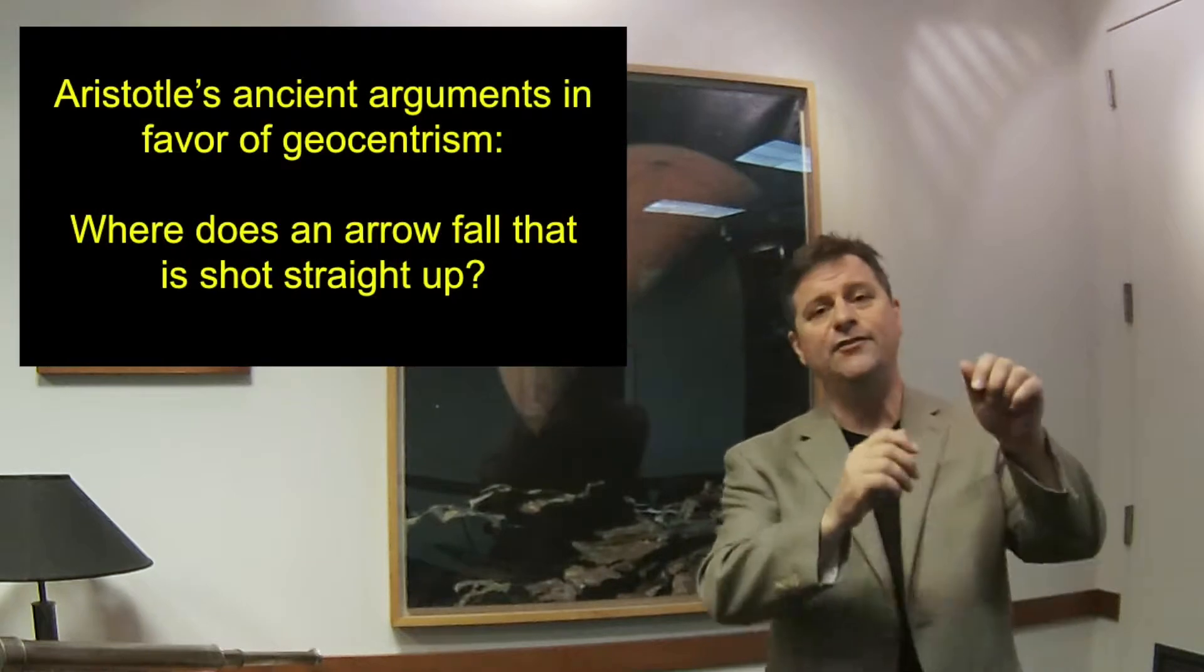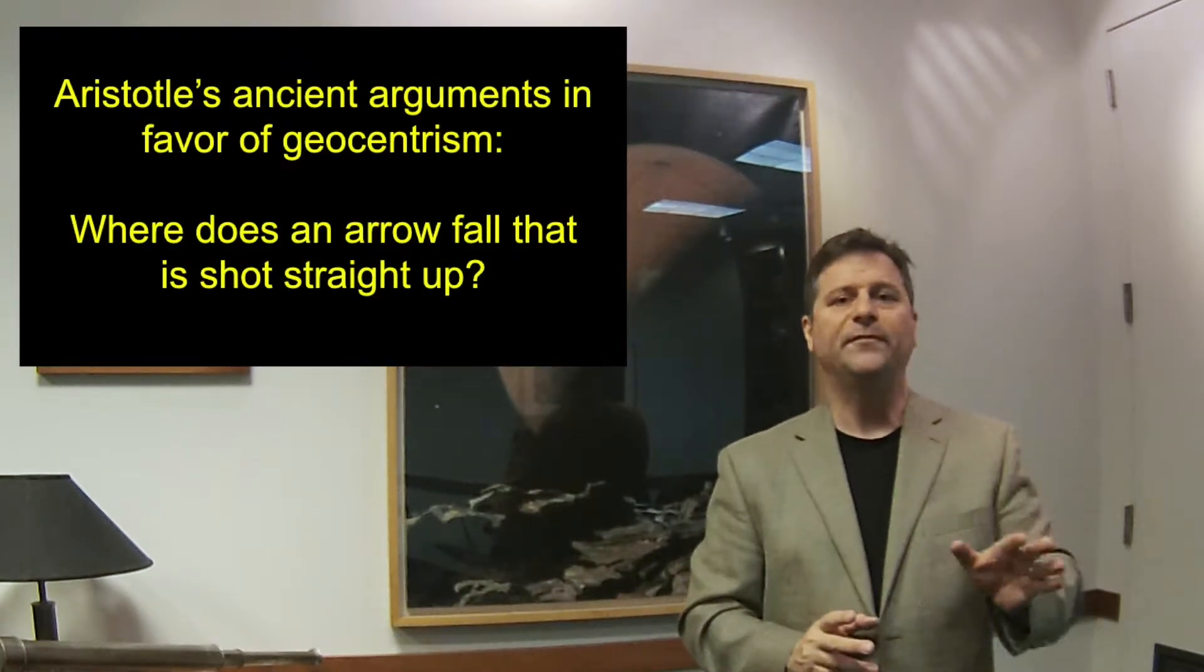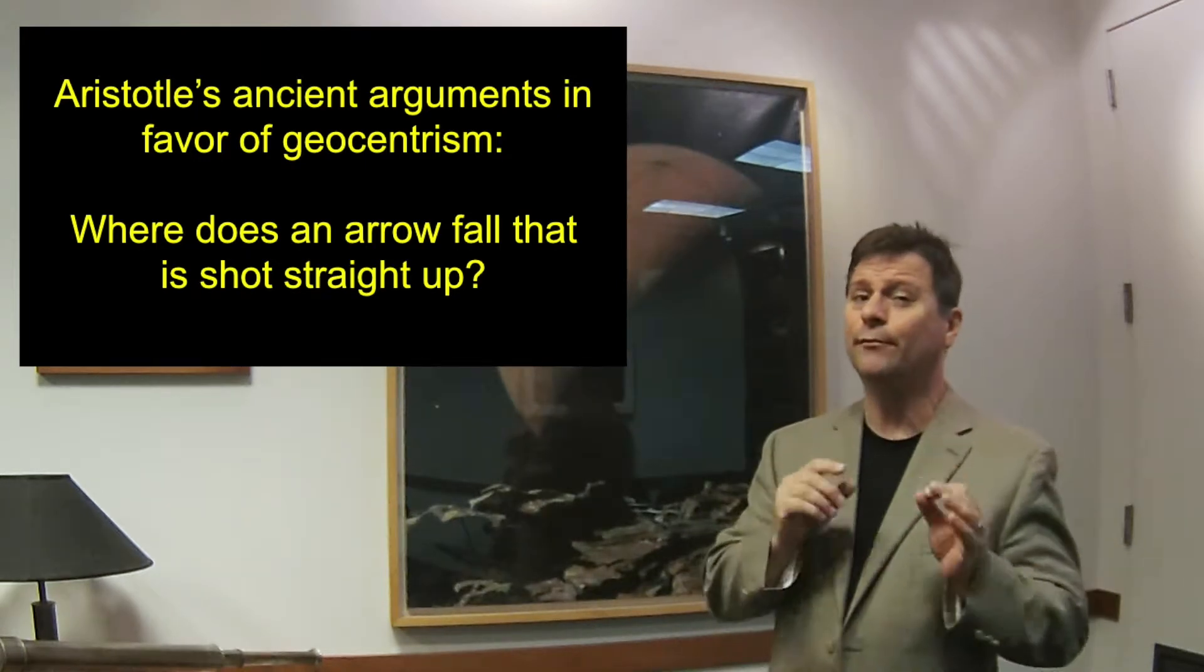Second, let's say you take an arrow and shoot it straight up. Where does the arrow fall? The arrow falls straight back down at your feet. If the earth were moving, then the earth should move out from underneath the arrow and fall to the ground. That's an interesting thought. Why doesn't it do that? It doesn't do that because the earth's not moving, or so Aristotle thought.